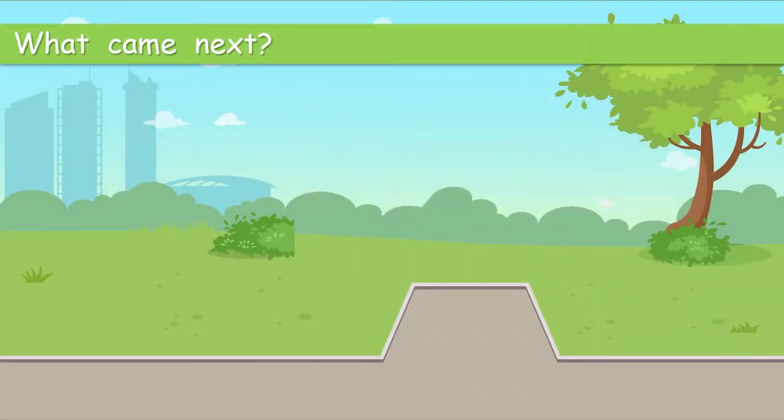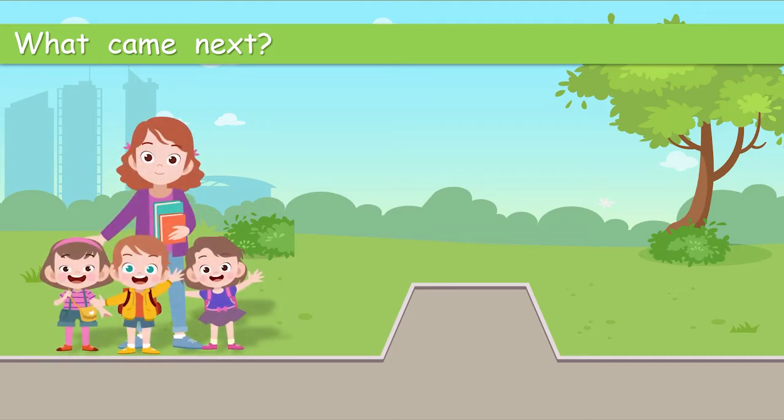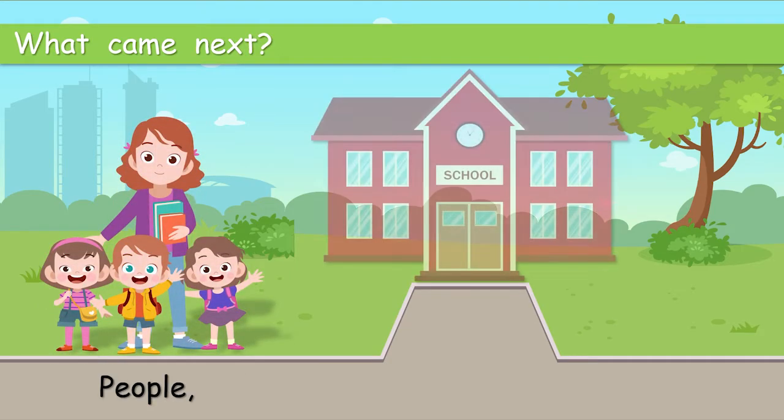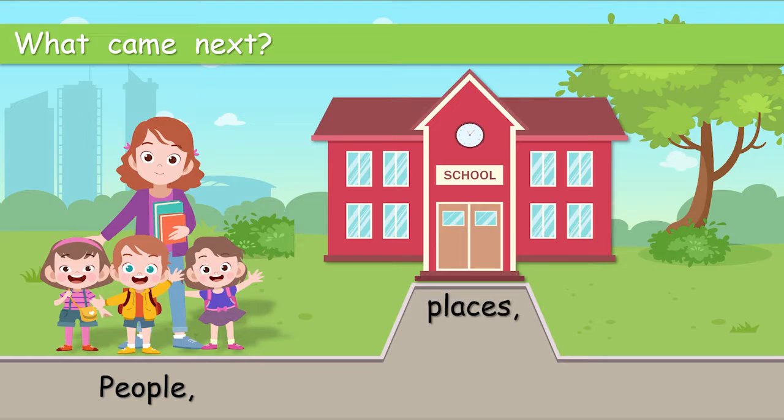So what came next? What did we talk about after things in the classroom? Try and think. It's a long time ago. We talked about people. People. Places. And things. Okay, so all of these we call them nouns. Nouns. So there we've got a teacher. That's a noun. A school. That's a noun. And a box. That is a noun.